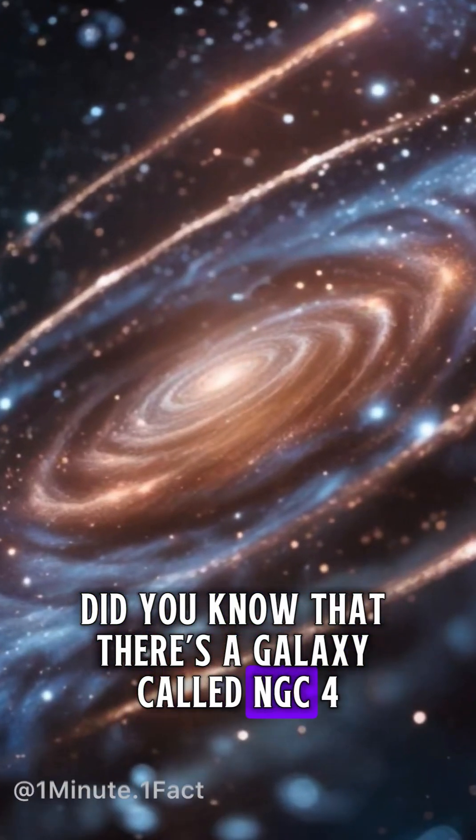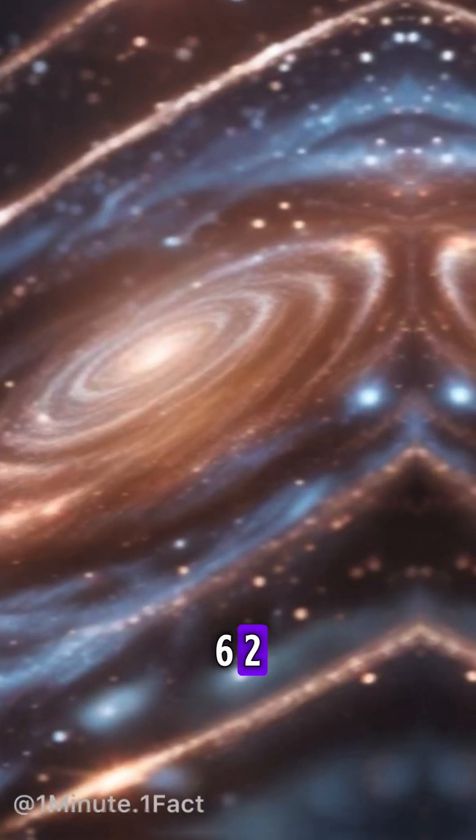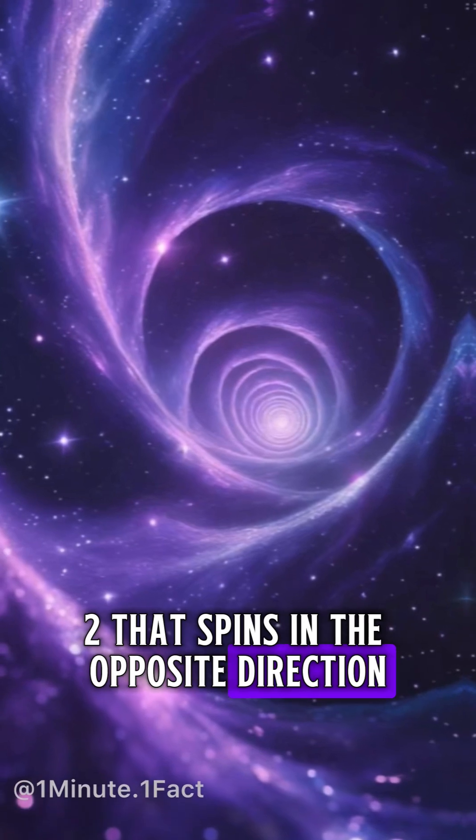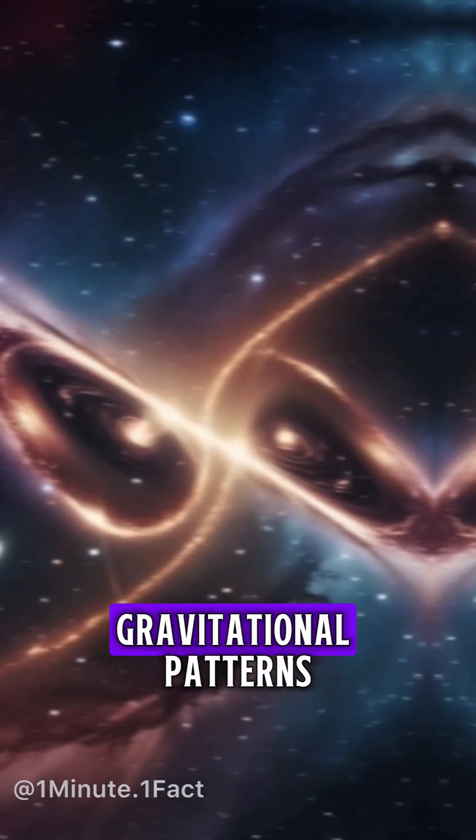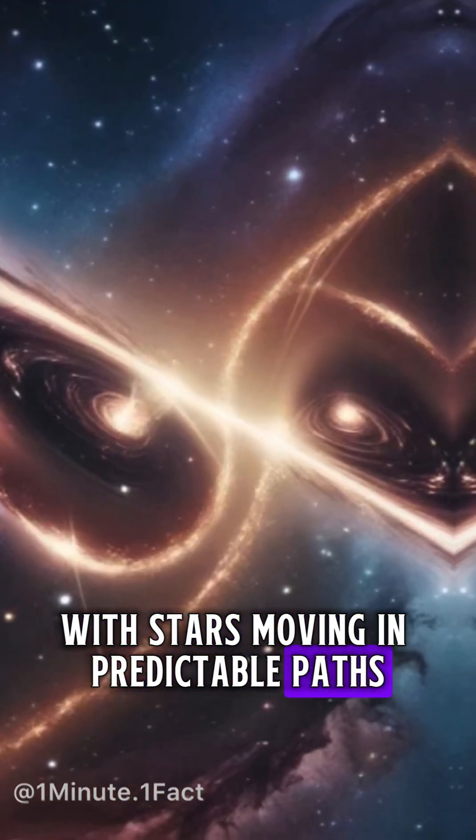Did you know that there's a galaxy called NGC 4622 that spins in the opposite direction from nearly all other galaxies? Most galaxies follow the expected gravitational patterns, with stars moving in predictable paths.